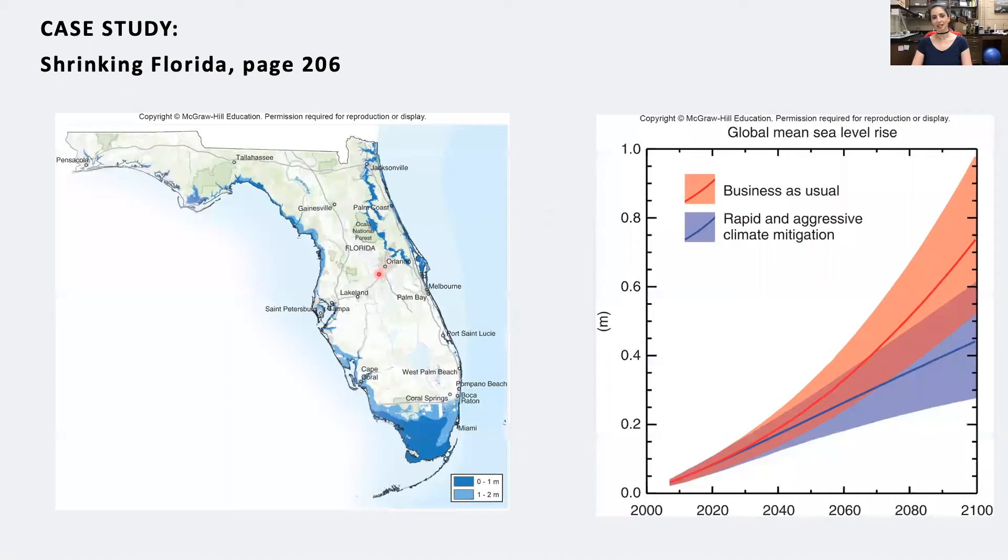We're going to start with a case study found in your textbook on page 206, focused on Florida, talking about climate warming and its impact on global sea level rise. Climate warming has already caused global mean sea levels to rise about eight inches within the past century alone. That might not sound like a whole lot, but it increases the height of storm waves and tides.